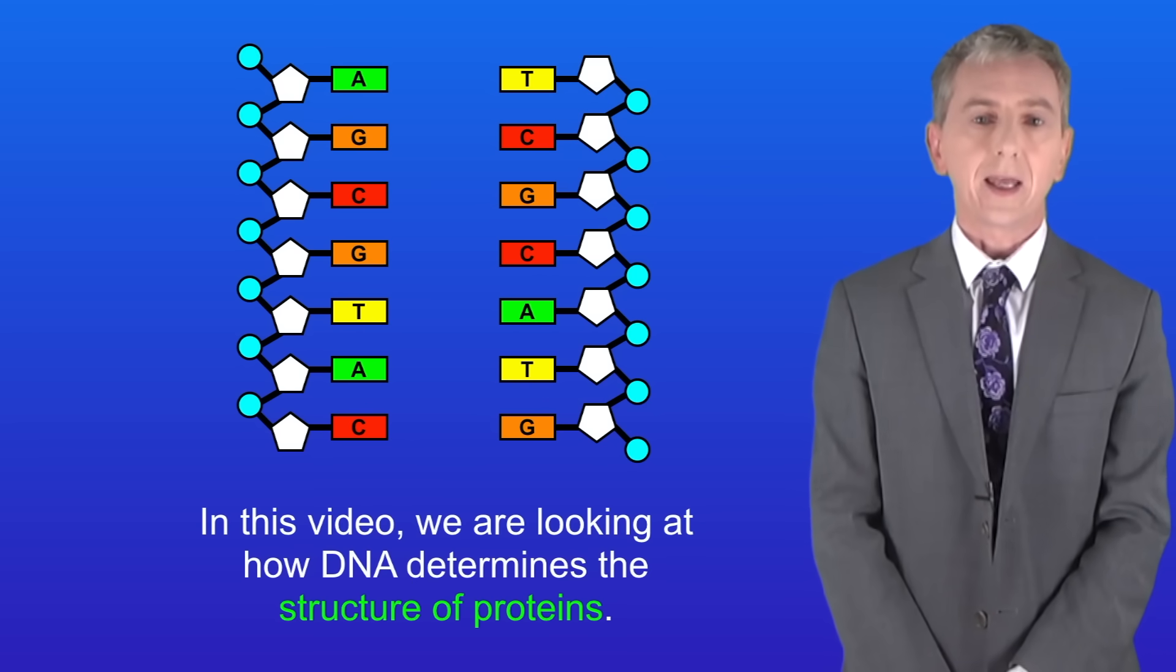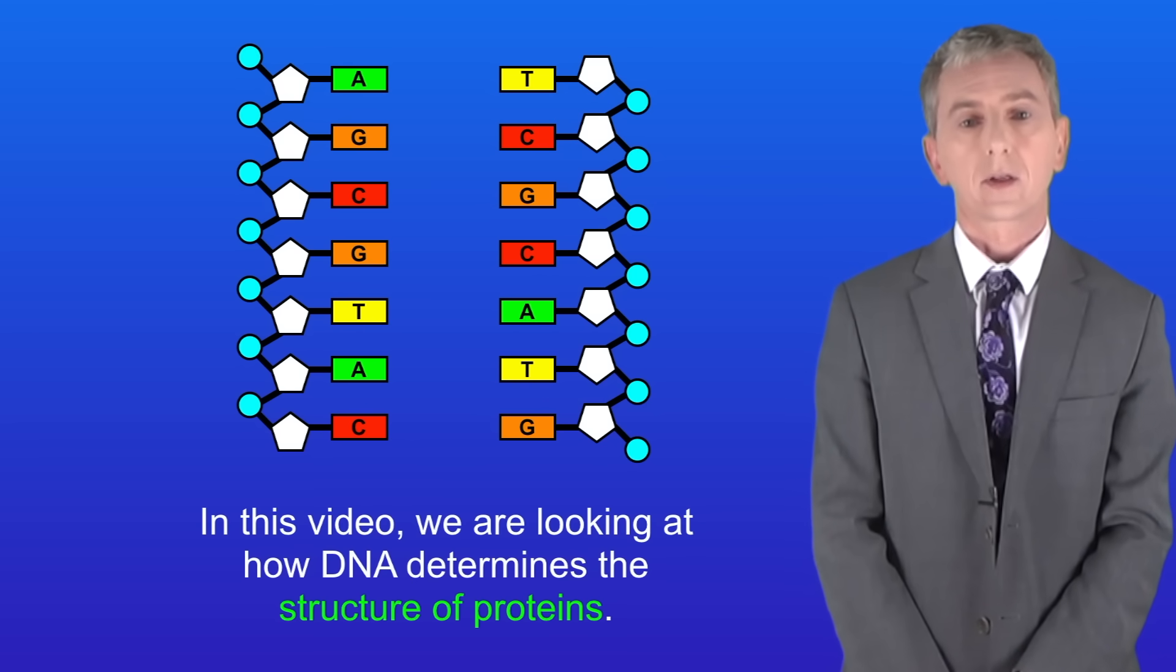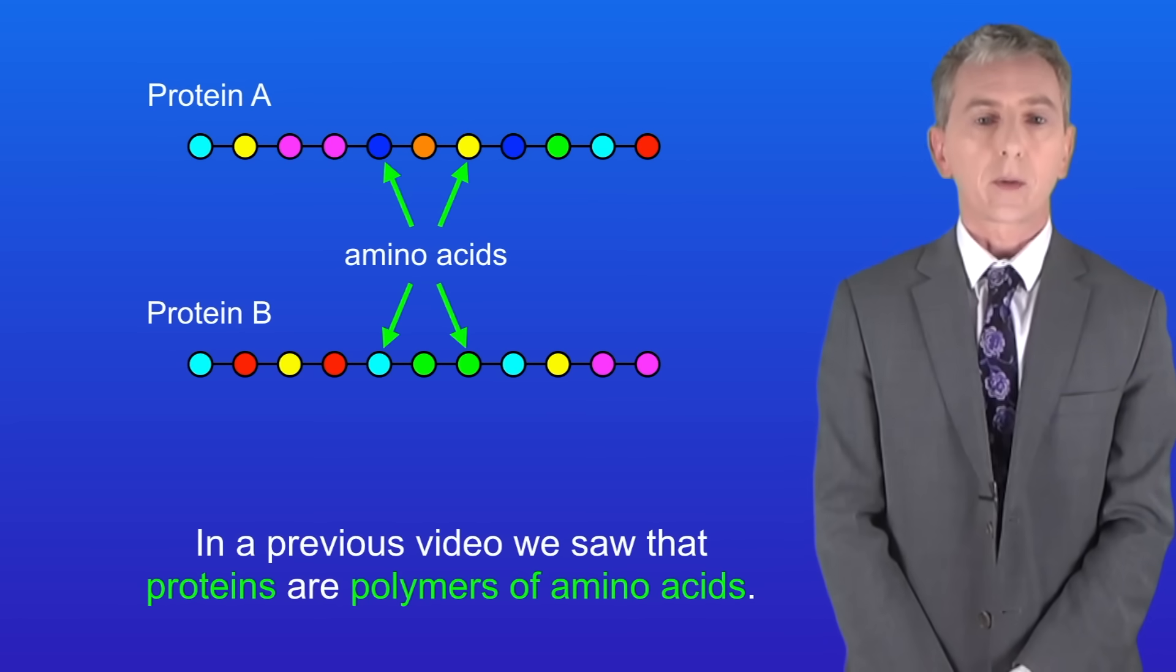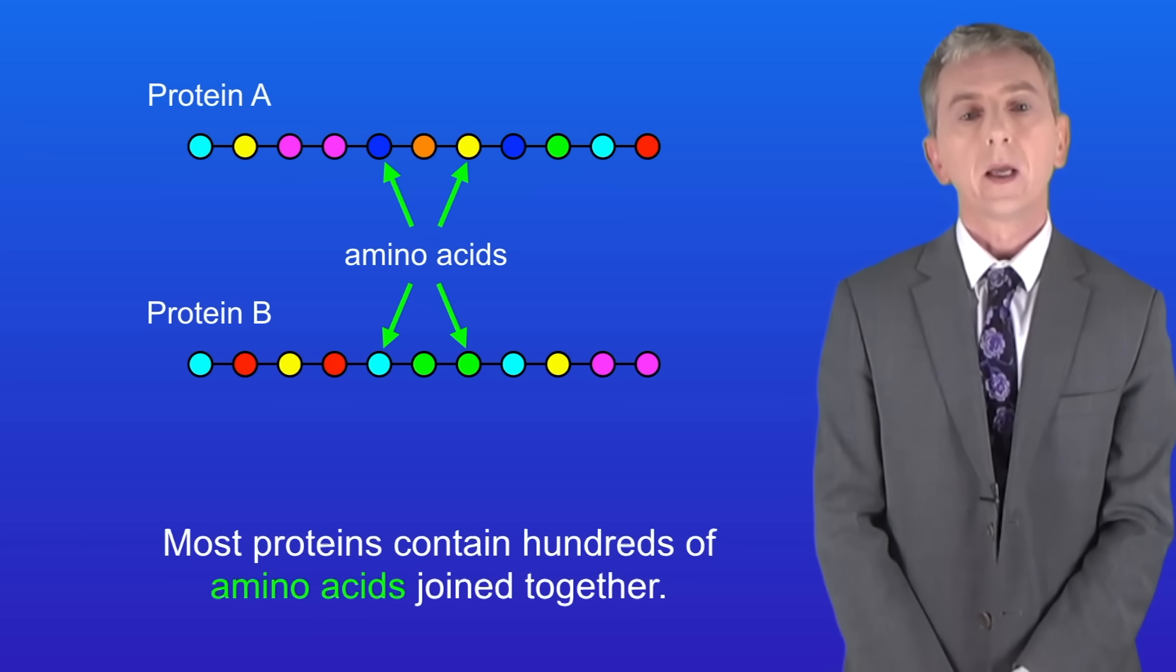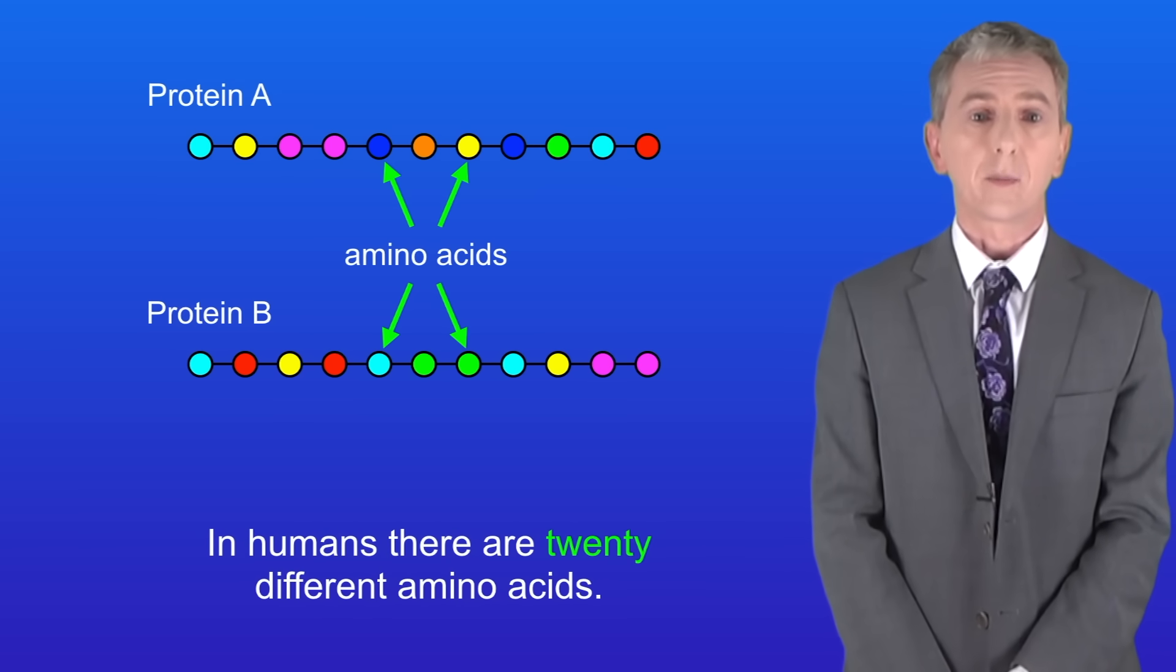So in this video we're looking at how DNA determines the structure of proteins. In a previous video we saw that proteins are polymers of amino acids. Most proteins contain hundreds of amino acids joined together. In humans there are 20 different amino acids.